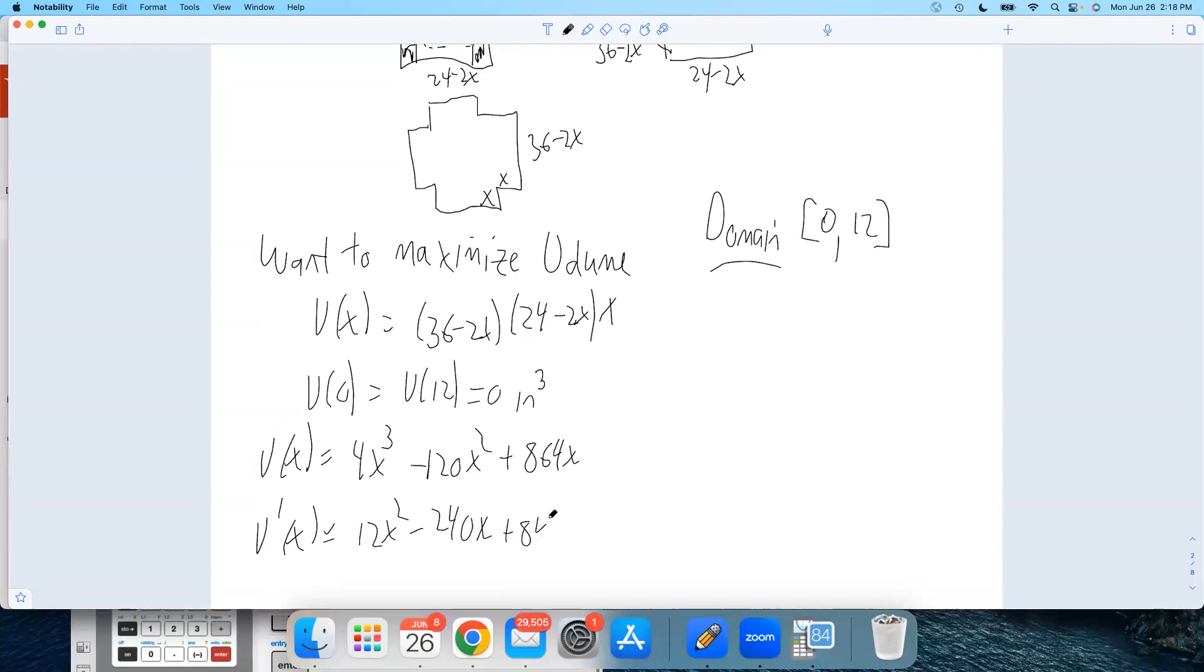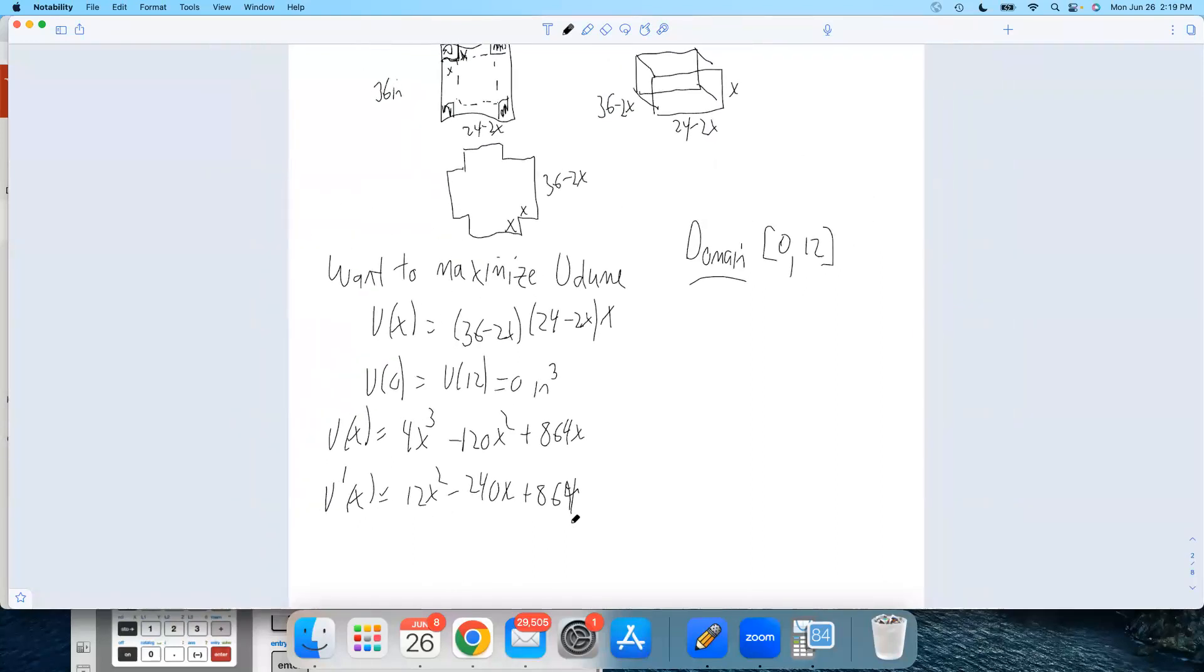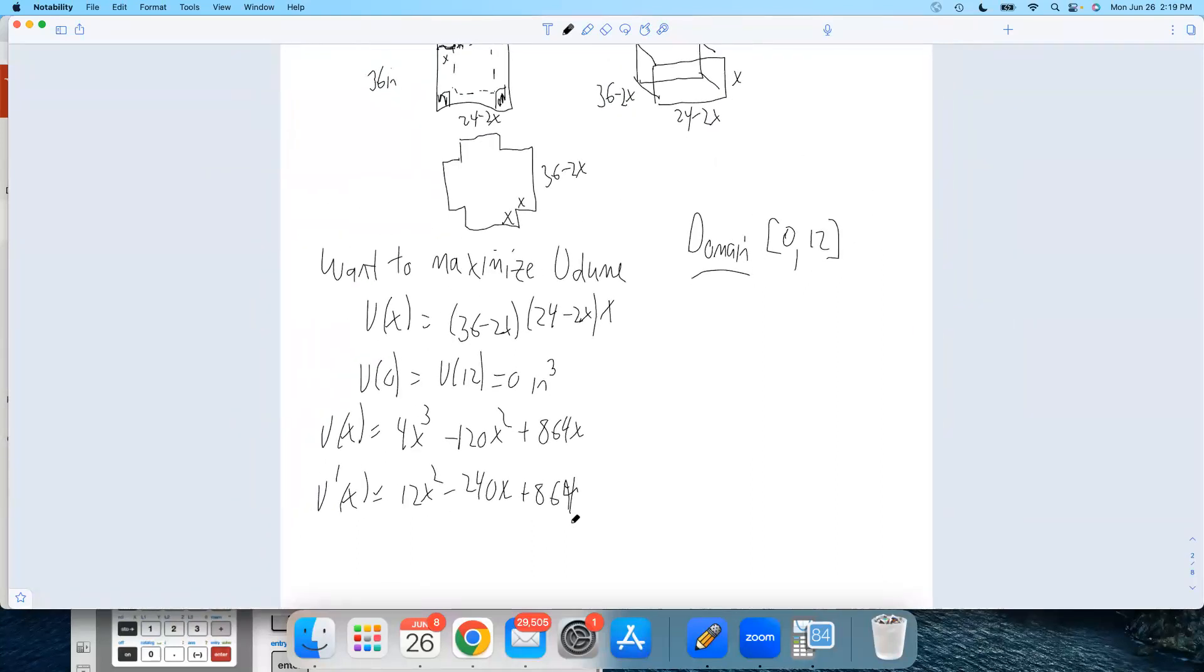Then the derivative is going to be 12X squared minus 240X plus 864. Okay, now what am I going to do with this? Always, like anytime you find yourself taking a derivative for the rest of the class, I don't want to say always, but like 75% of the time, the reason you took the derivative was to set it equal to zero. So like if you're working a calculus problem and you don't know what to do, again, I'm not saying this always works, but a lot of the times setting the derivative equal to zero was probably the right move. And here it is. We're trying to find the critical points. Think about what this function looks like. This is a cubic function.